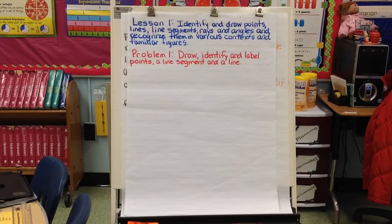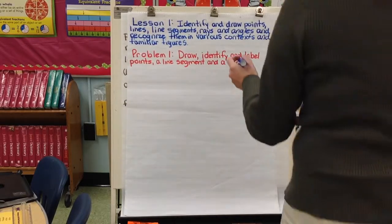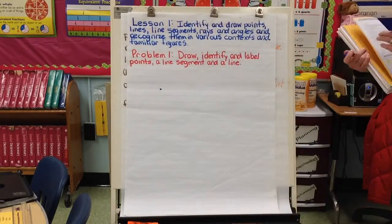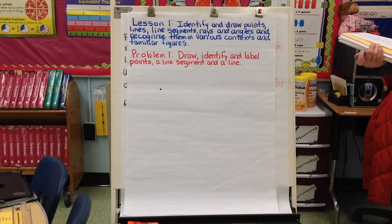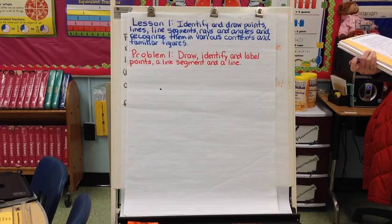So the first thing that we're going to do is we're going to draw, identify, and label points, a line segment, and a line. So let's just start by a point. What you would simply do is put an X or a dot on your paper, and there's a point. We've all seen that before, and it just gives us a spot of a specific location.